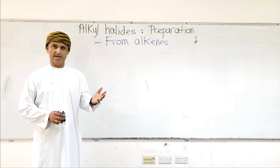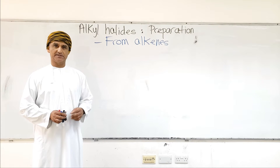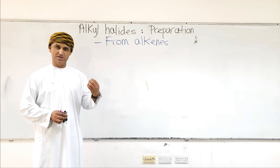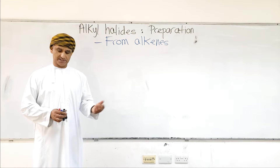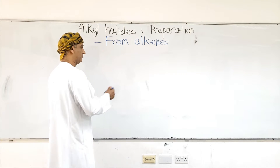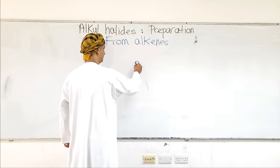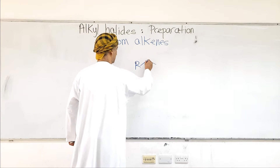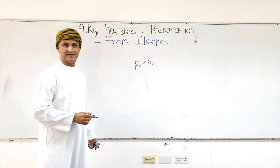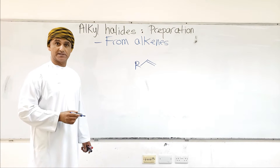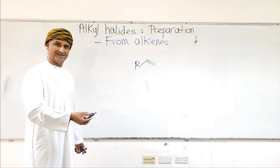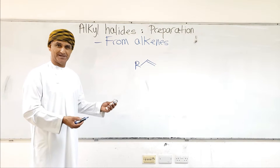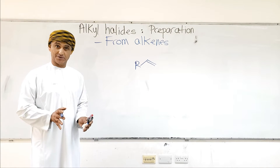Alkyl halides can also be made from alkenes — this is something we have taken before when we talked about alkenes and their reactions. We take the general structure of alkenes. Alkenes undergo electrophilic addition reactions with HX, so if you add HX to alkenes, then an alkyl halide is produced, following Markovnikov's rule.